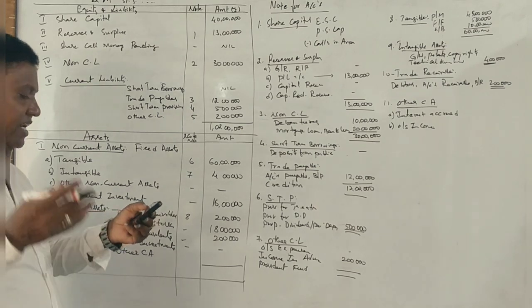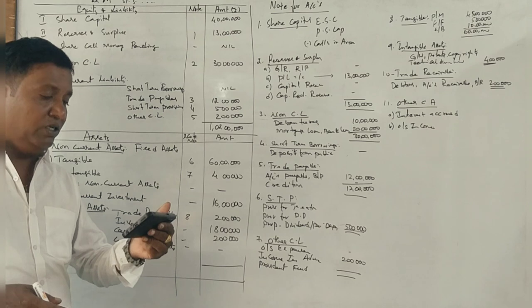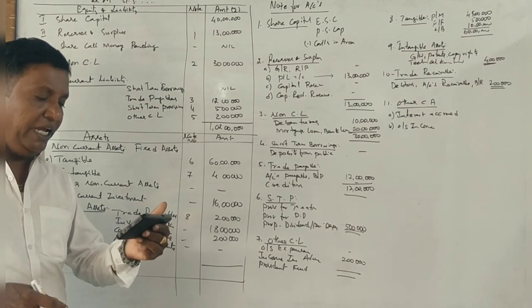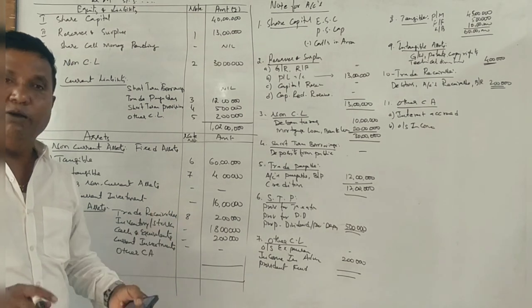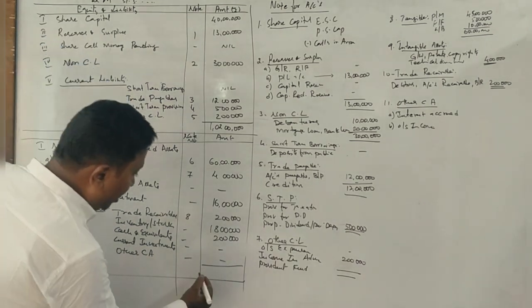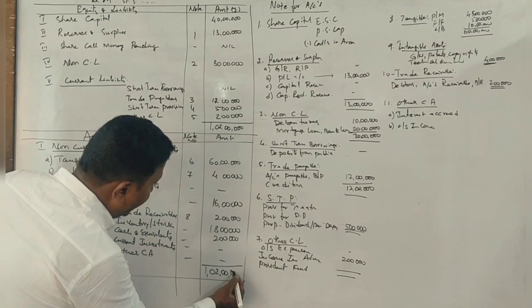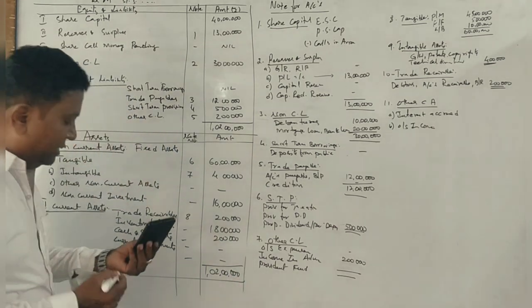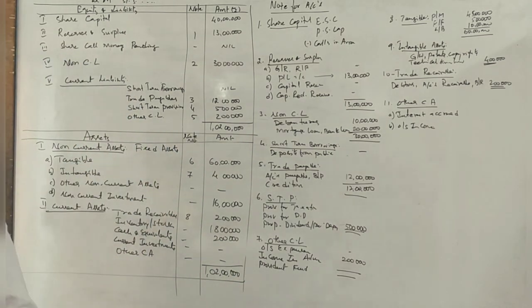Other current assets: the total comes to 8 lakhs. The overall asset side total is 8 lakhs, confirming the balance sheet tallies.